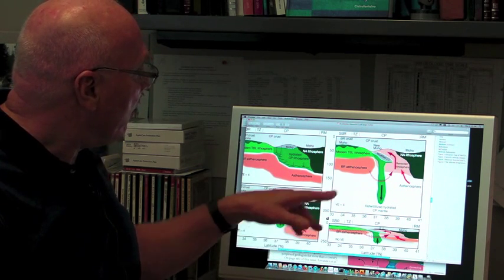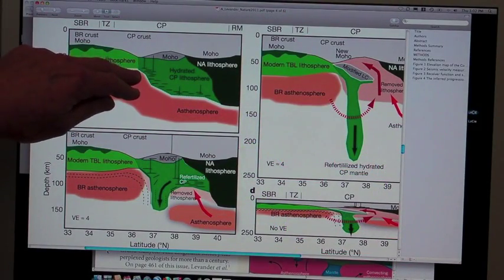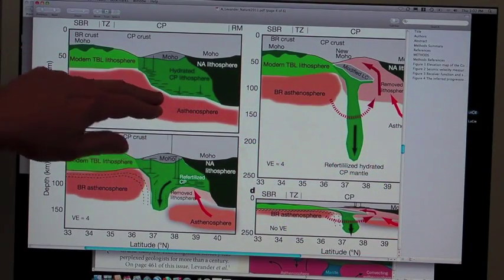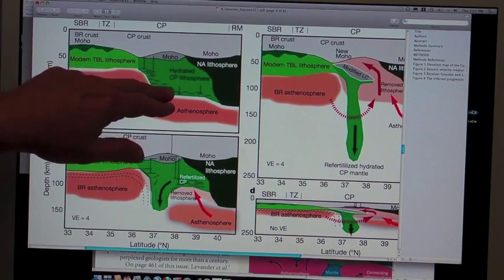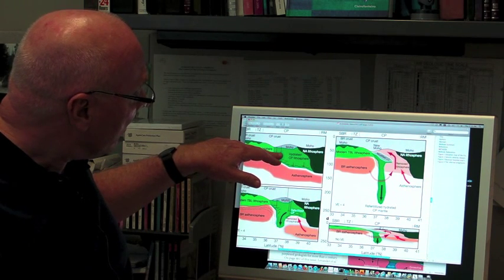And then there was a topographic gradient along the bottom of the lithosphere, asthenosphere boundary, and then along this gradient, melt started being produced in the asthenosphere, and they invaded the lithosphere.